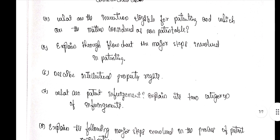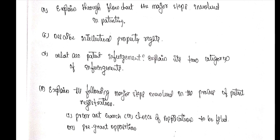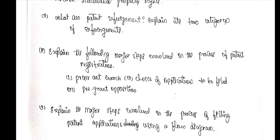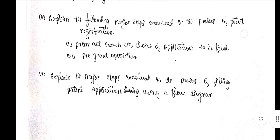Question 6 — describe intellectual property rights. Question 7 — what are patent infringements? Explain its two categories of infringement. Question 8 — explain the following major steps involved in the process of patent registration, including choice of application to be filed and pre-grant opposition. Question 9 — explain the major steps involved in the process of filing a patent application using a flow diagram. These nine questions are very repeatedly raised in the model question papers, completing the full third module.